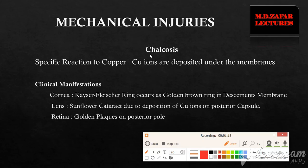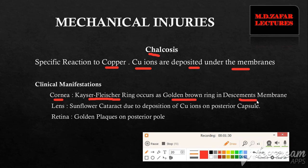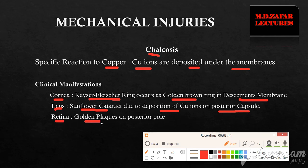The second type of specific reaction is chalcosis, caused by copper. Copper ions get deposited under the membranes and produce specific symptoms. In the cornea, Kayser-Fleischer rings occur as a golden-brown ring in Descemet's membrane. The lens develops a sunflower cataract due to deposition of copper in the posterior part of the capsule, and the retina becomes golden plaqued on its posterior pole.